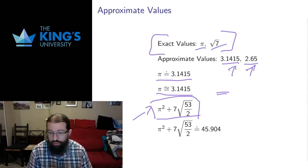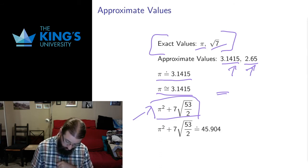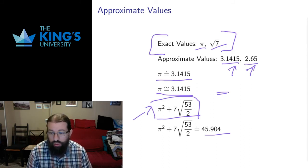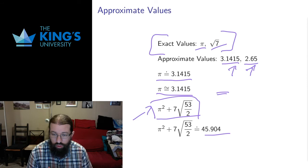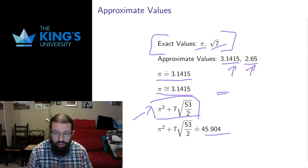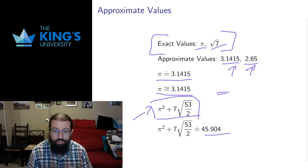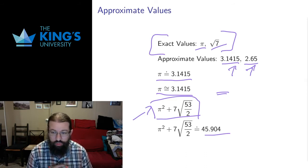Whereas if we go to approximate values, and I asked a computer for this, it's approximately 45.9, which gives me a sense of the magnitude of the number. So at the end of the day, doing an approximation, giving yourself a decimal expansion, gives you a much better concrete handle on how large the number you've produced is.